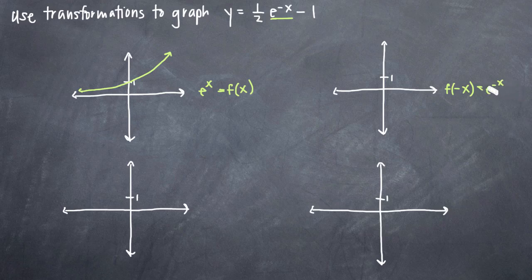What we should know from our knowledge of transformations or our study of transformations is that if you plug in negative x for x into a function, it's just going to flip the graph across the y-axis. So we're going to have the same function except that it's going to be backwards like this, flipped across the y-axis.